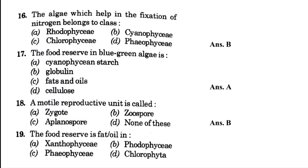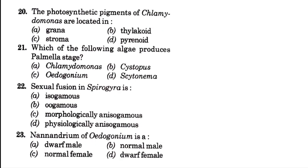The food reserve is fat or oil in — blank: Xanthophyceae, Rhodophyceae, Phaeophyceae, or Chlorophyta. The answer is option A, that is Xanthophyceae. Then, the photosynthetic pigments of Chlamydomonas are located in — blank: grana, thylakoid, stroma, or pyrenoid. The answer is option B, that is thylakoid, because normal chloroplasts are seen in green algae.